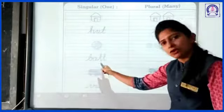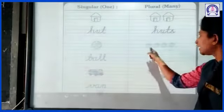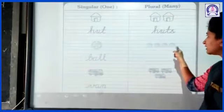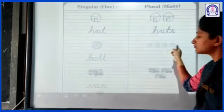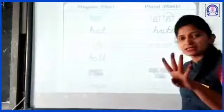B-A-double L, ball. But here, more than one ball — one, two, three, four. Four balls are there.